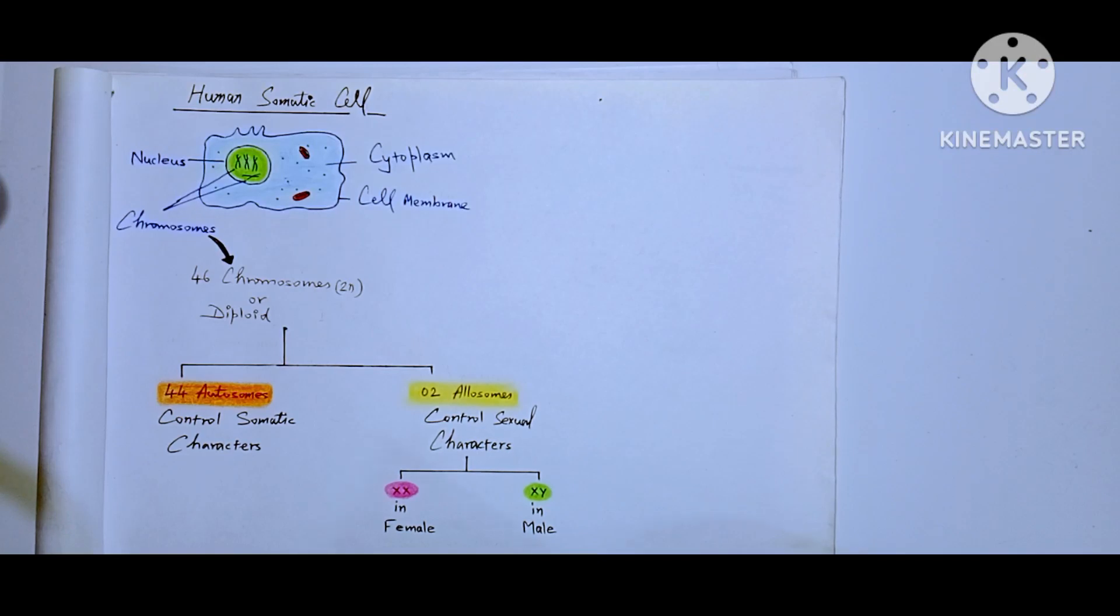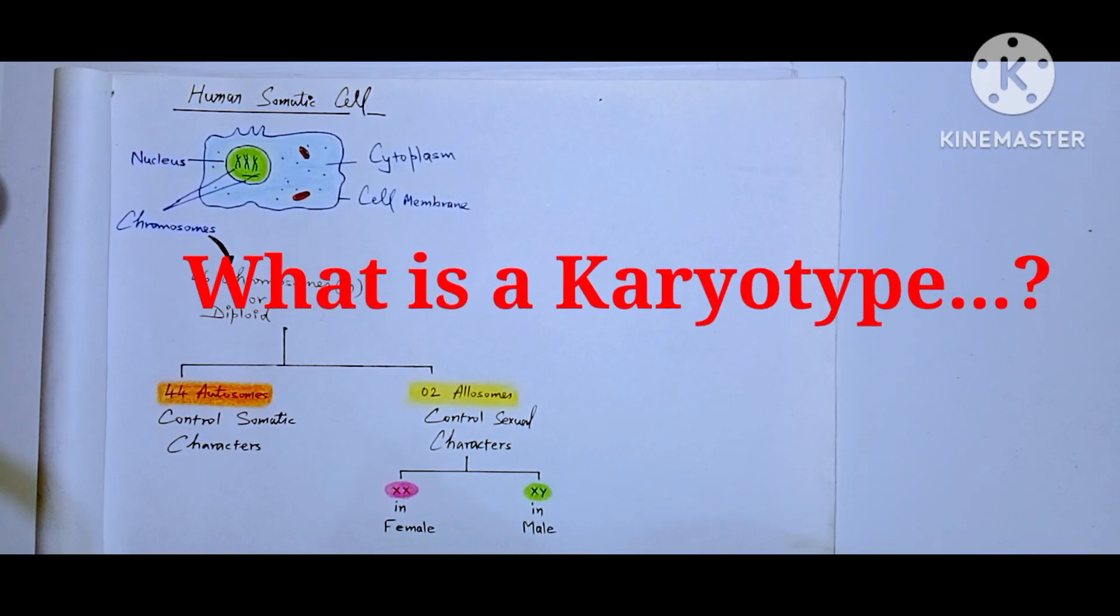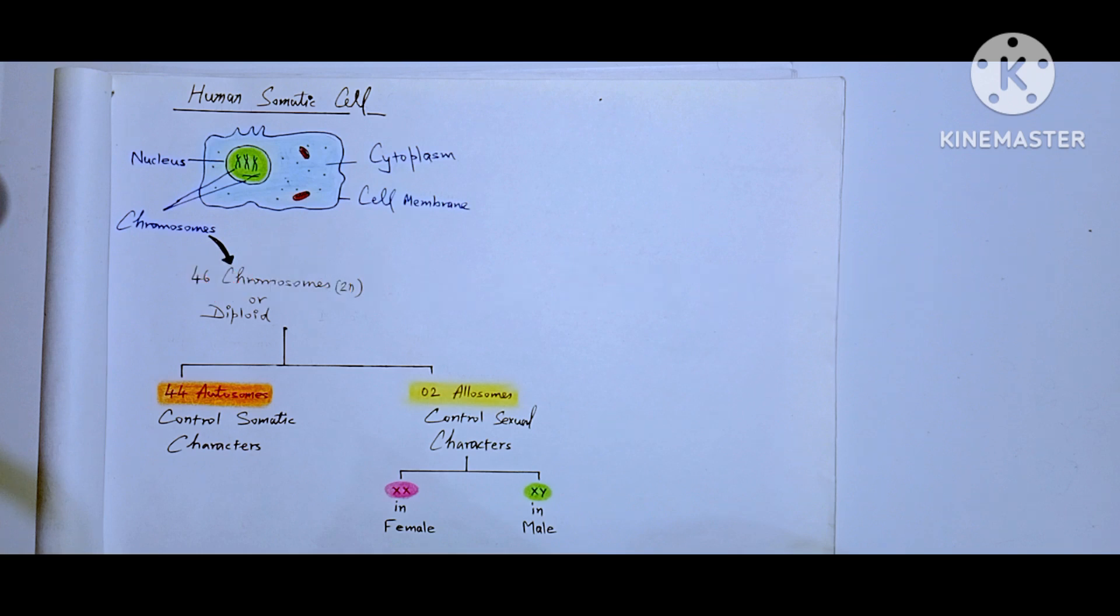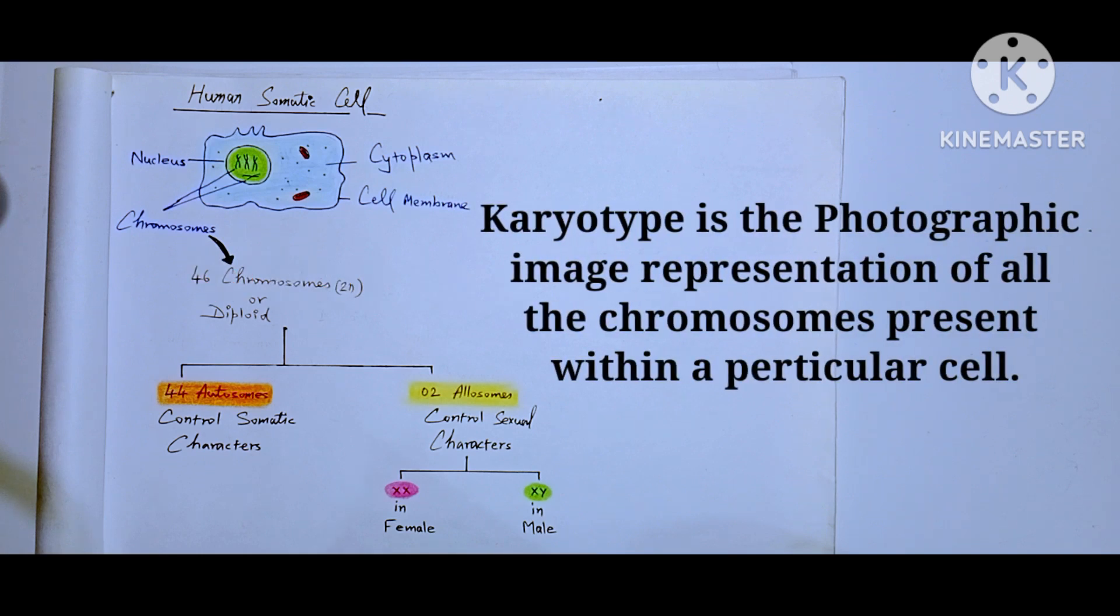Now let me explain what is a karyotype. Karyotype is the photographic image representation of all the chromosomes present within a cell.